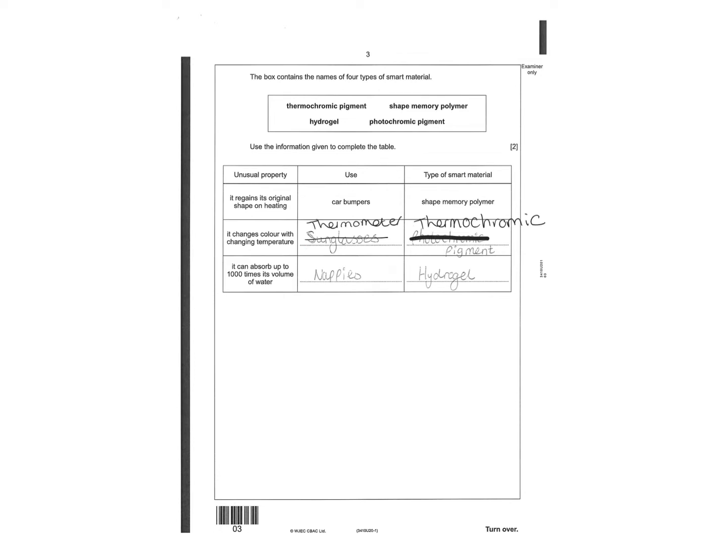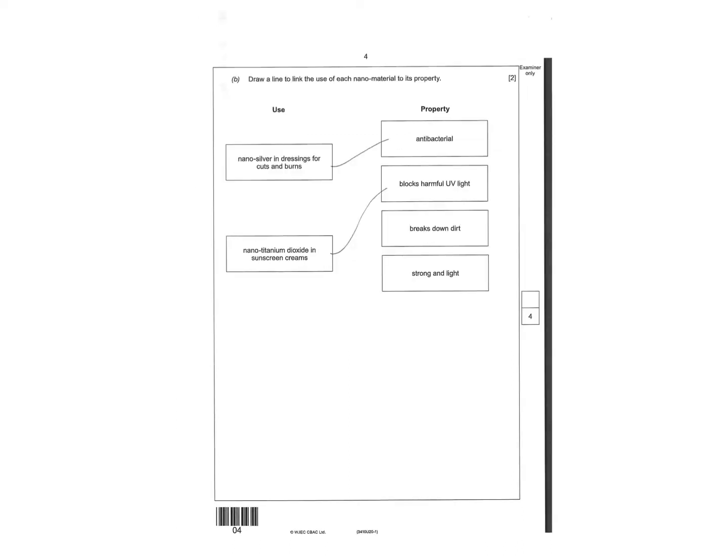Something that can absorb up to 1,000 times its volume of water, that's nappies and hydrogels. Next question asks you to look at nanomaterials. Nano silver in dressings for cuts and burns is antibacterial, and nano titanium dioxide in sun cream blocks harmful UV.